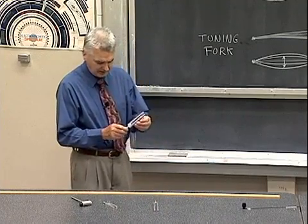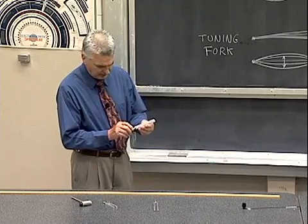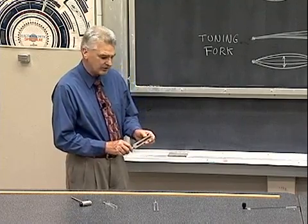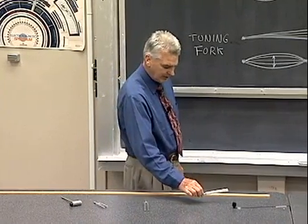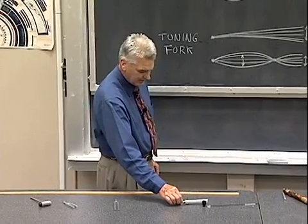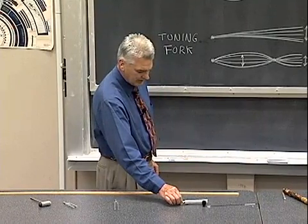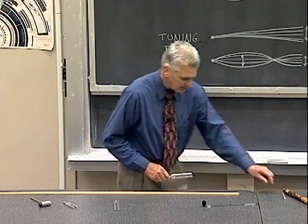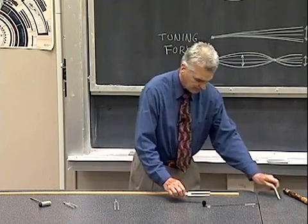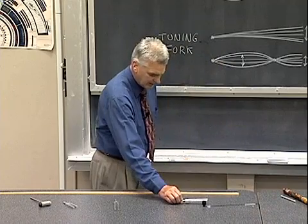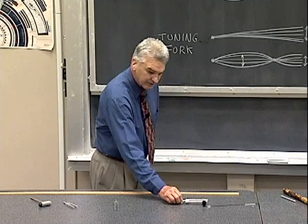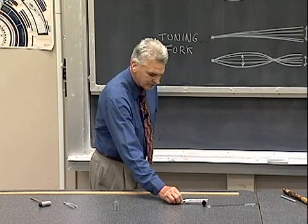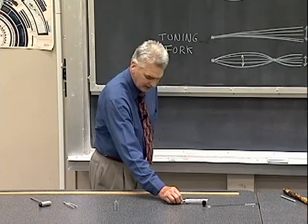Let me demonstrate this tuning fork here. It has a frequency of 512 cycles per second, corresponds to middle C on our scale, and with a higher harmonic. There's still a little bit of 512 cycles per second, but the higher frequency dominates and then quickly dies out.